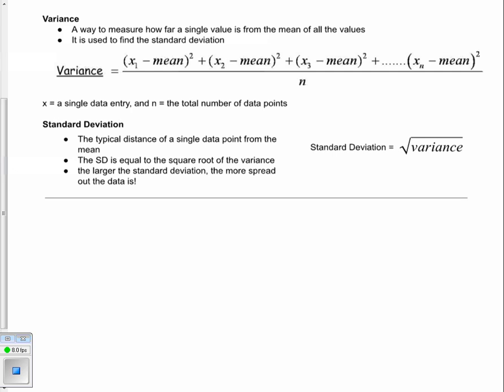And then we use that in order to figure out what the standard deviation is. And standard deviation is simply equal to the square root of the variance. You've done square roots back when we did Pythagorean theorem and so forth, so that's not outside the realm of understanding. So standard deviation is the typical distance of a single data point from the mean or from the average.